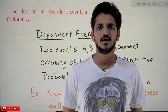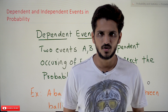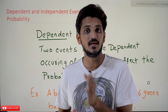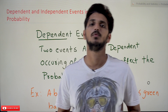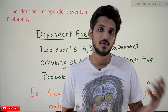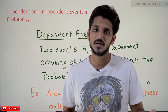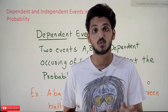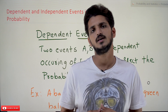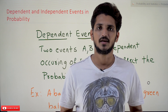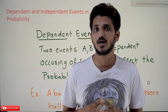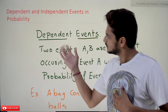Hi, welcome to Learning Monkey. I am Raghu. In this class we will discuss about dependent and independent events in probability. In previous classes we have done some examples on probability using combinations and probability using union — please watch those classes, they will help you a lot in understanding this class. The link for the playlist is provided in the description below.